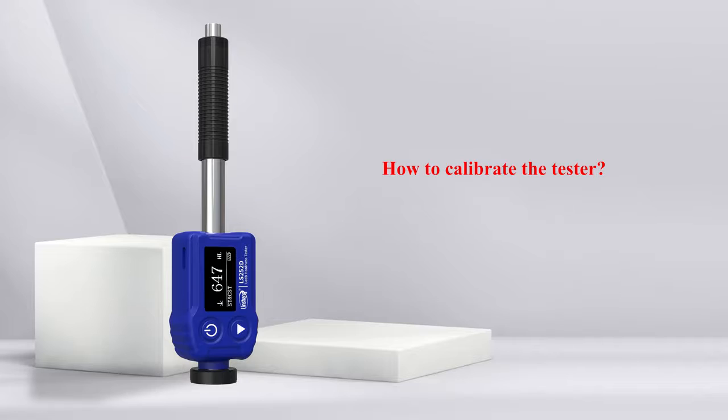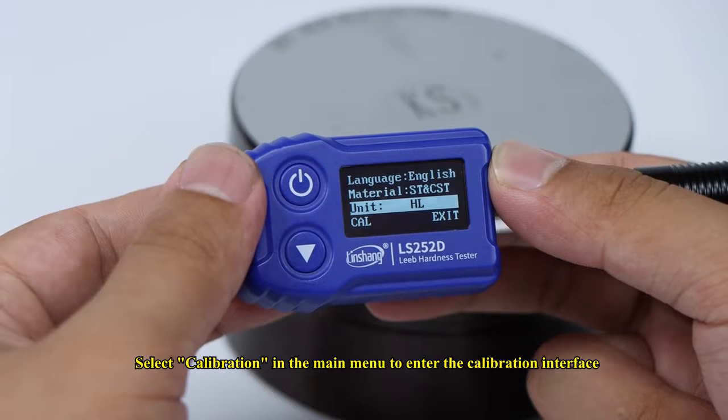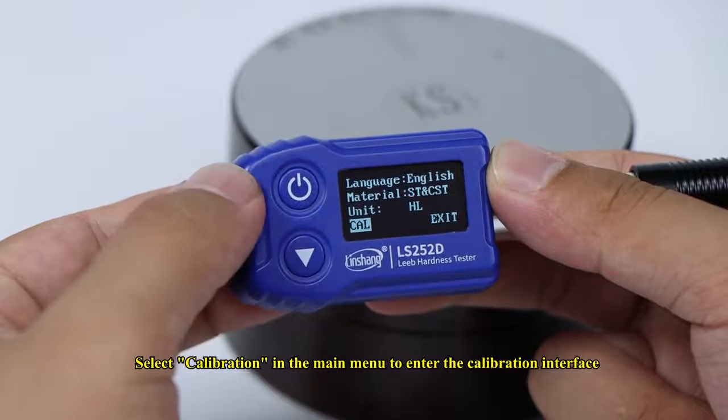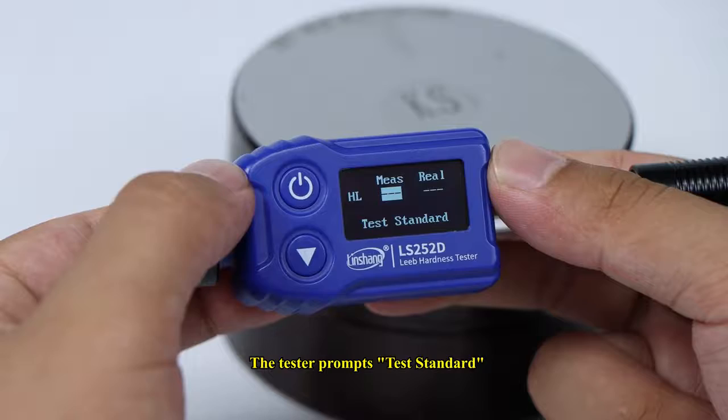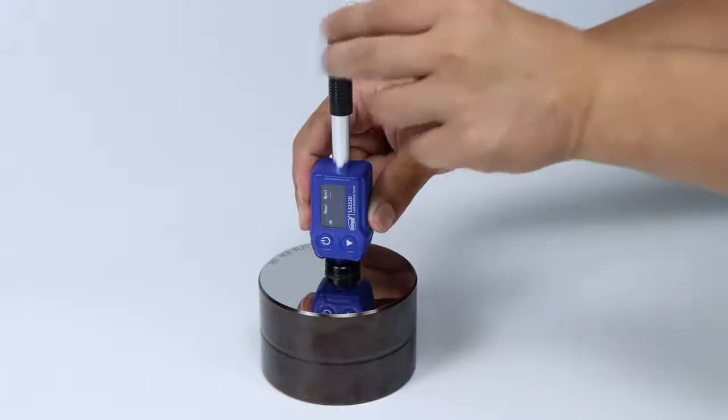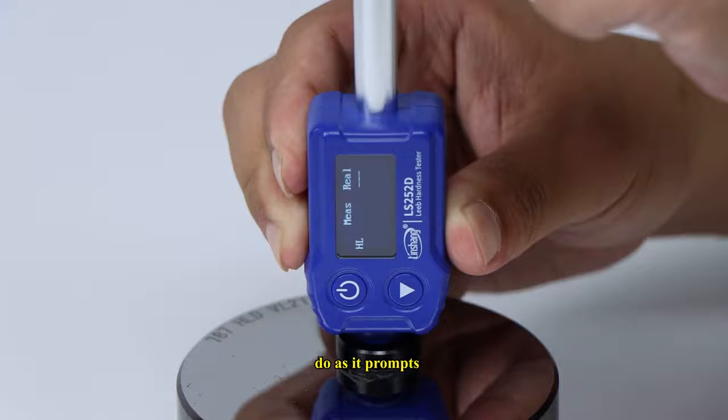How to calibrate the tester: Select calibration in the main menu to enter the calibration interface. The tester prompts test standard. Do as it prompts.